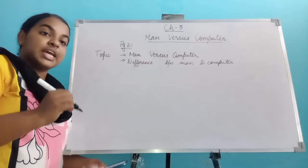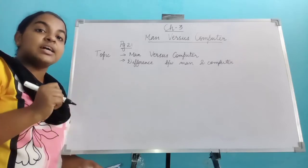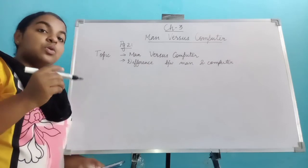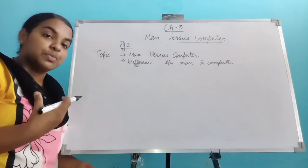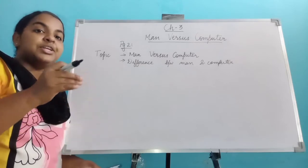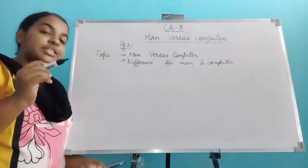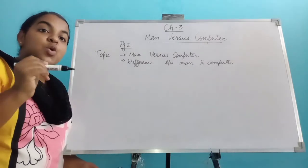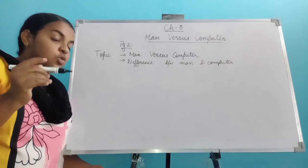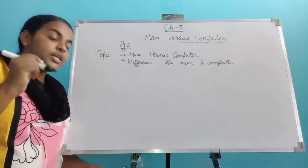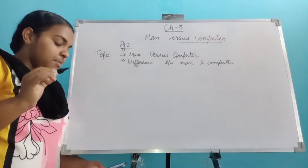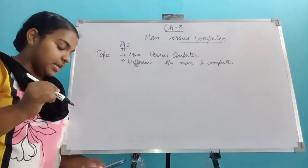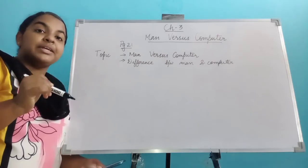Therefore we can say a computer is better than a man, according to the introduction of the chapter. Now we are going to see some of the arguments between a girl and a boy under the topic man versus computer. First, a boy is saying: 'But how can it be possible?'